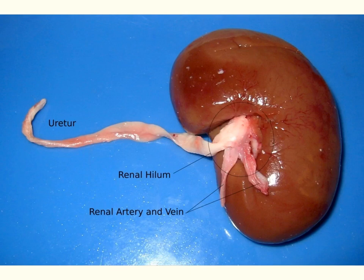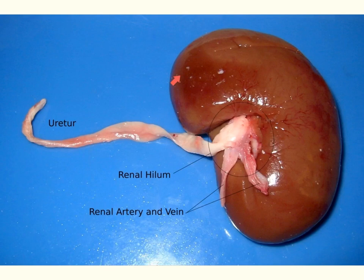There are four primary components to the kidney. The first is a covering over the kidney known as the renal capsule. While it's not present right here, it is a smooth, semi-transparent membrane.